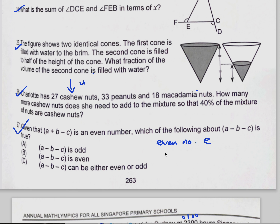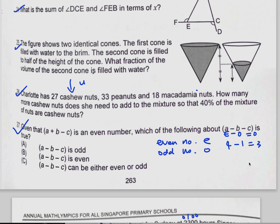Let me use E for even number and O for odd number. So a simple example: four minus one gives you three, right? So even minus odd will give you odd — yes.